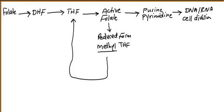To recap: folate → dihydrofolate → tetrahydrofolate → active folate → purine and pyrimidine for DNA and RNA synthesis. To conserve folate, active folate is converted to its reduced form, methyl-tetrahydrofolate, which then converts back into tetrahydrofolate to keep the cycle going.